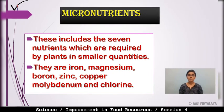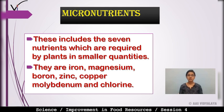Micronutrients are required by plants in smaller quantities. For example: iron, magnesium, boron, zinc, copper, molybdenum, and chlorine — these 7 nutrients are required by plants in smaller quantities. So the difference is: macronutrients are taken by plants in large quantities from the soil, while micronutrients are taken in smaller quantities.